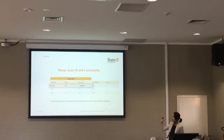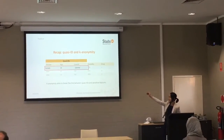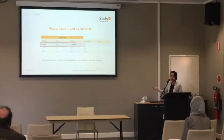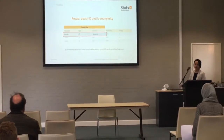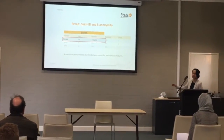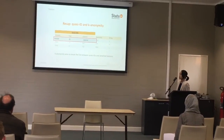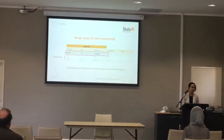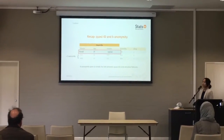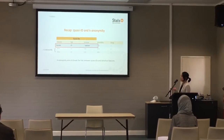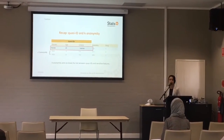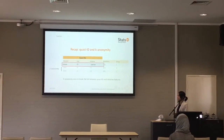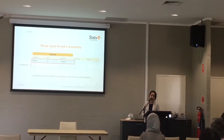Even if you know someone who is Eric, who is a 26-year-old male with a full driver's license, you can't distinguish whether it's the second or the third record that refers to him. We call this scenario k-anonymity. The first record violates it, whereas the second record satisfies it.